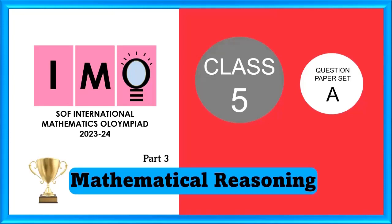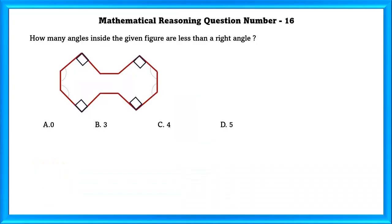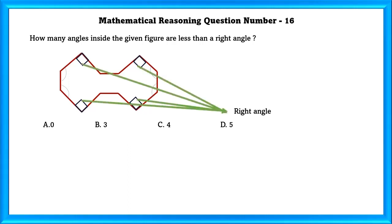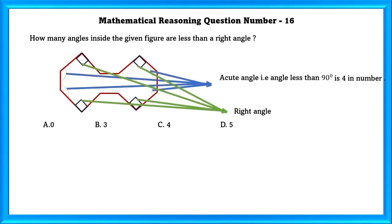Class 5 IMO Part 3 Mathematical Reasoning, Question No. 16: How many angles inside the given figure are less than a right angle? There are 4 right angles in this figure. Acute angles, that is angles less than 90 degrees, are 4 in number. So our answer is C, 4.